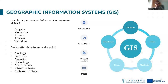The main tools for geospatial knowledge development and analysis are GIS and digital mapping. GIS stands for Geographic Information Systems. GIS is a particular information system able to acquire, memorize, extract, process and visualize geospatial data from the real world. GIS can work with data related to geology, land use, elevation, hydrology, environment, infrastructure and cultural heritage as main examples of data that can be used in a GIS.